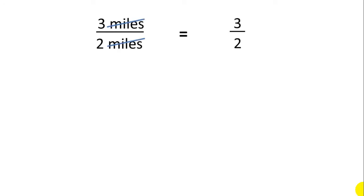So first, a few rules. We always want to cancel units whenever possible. In this case we can see three miles over two miles — the miles are cancelable because we have miles in both the numerator and the denominator. So three miles over two miles is equivalent to three over two because the units cancel. I'll call this the units cancel rule.